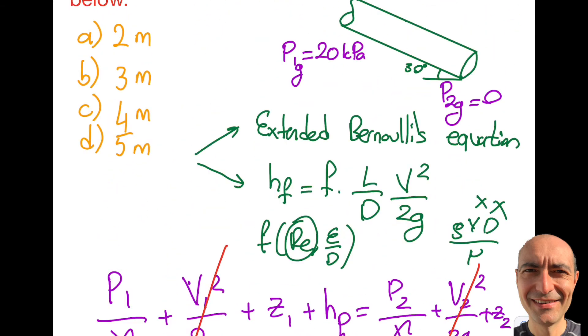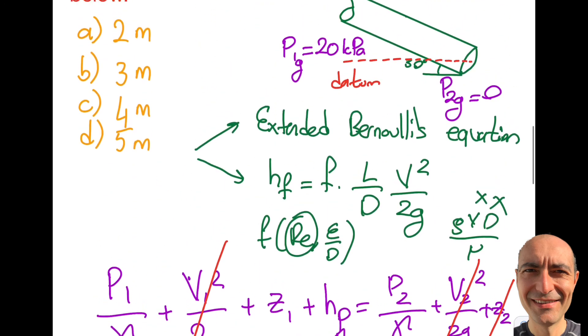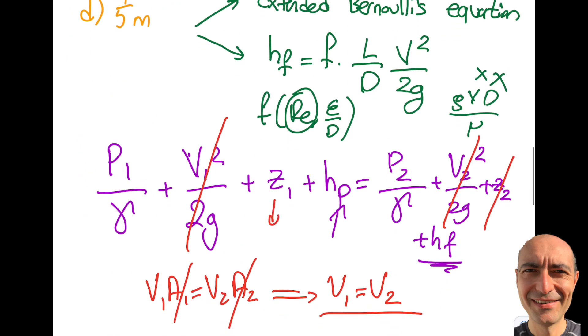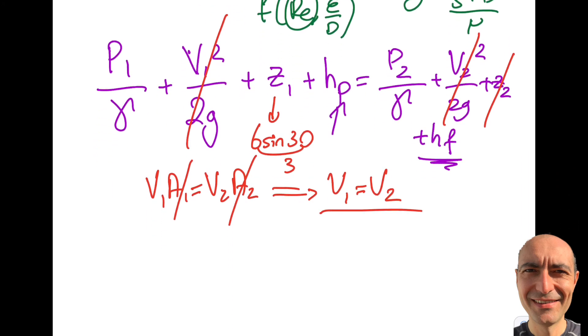If I go ahead and find a datum like this, so that is aligned with the center of the cross section number 2. And if this becomes a datum, then what will happen is the z2 will be 0. So that will be gone. And what will be z1 while we are there? The length of the pipe is given as 6 meters. So this is going to be 6 times sine of 30, which is 3. Sine of 30 is 1 half. So this is 3. That's the number. So then I should be good to go.